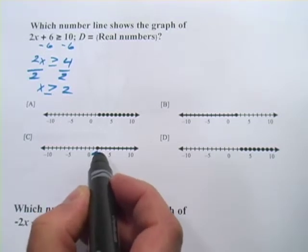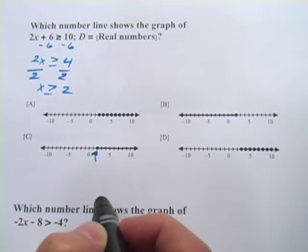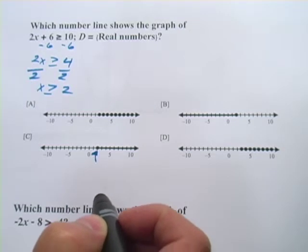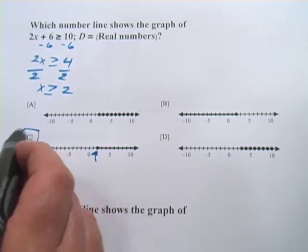Because the dot is filled in, that represents that 2 is included in this. So it looks like C would be the correct choice for this first one.